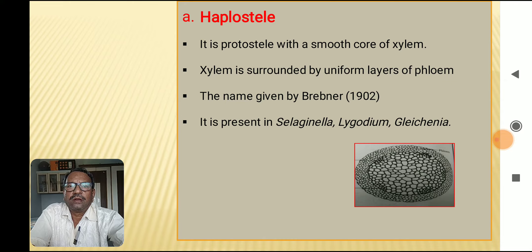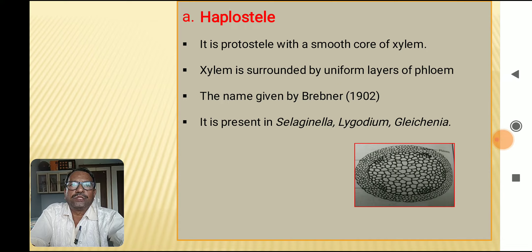The first protostele type is haplostele. It is a protostele with a smooth core of xylem, surrounded by uniform layers of phloem. The name was given by Brevner in 1902. It is present in Selaginella, Lygodium, and Gleichenia.